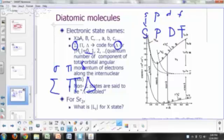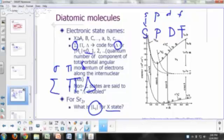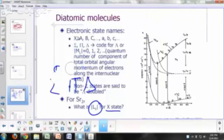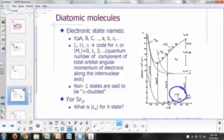So what is the L sub Z for the X state of strontium? Here's strontium right here, this diagram right here, diatomic strontium. Notice the ground state is a singlet sigma G plus. What does that one mean? It's a singlet, right? That means all electrons are paired.